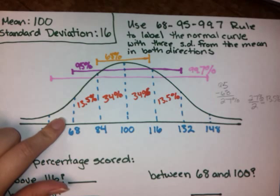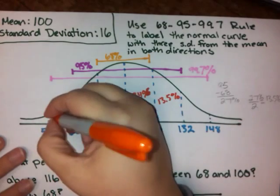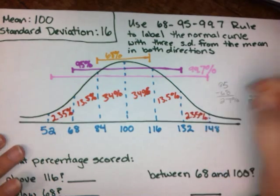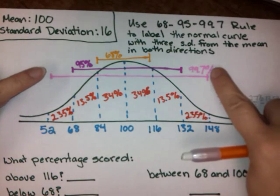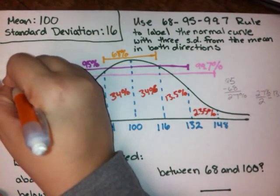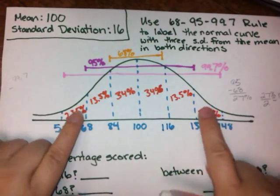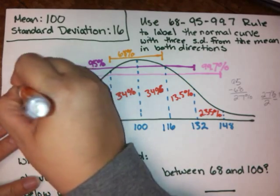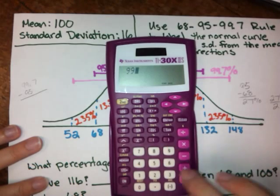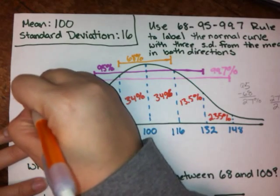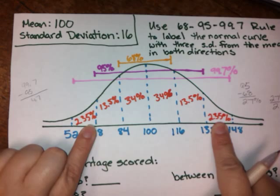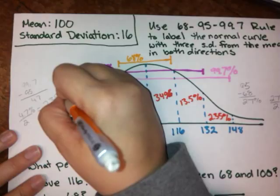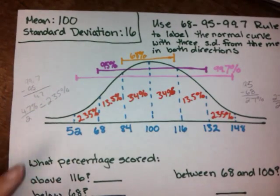What about between 2 and 3 standard deviations away? Those are going to be 2.35% on each side. Here's the work: 99.7% fall within 3 standard deviations. We subtract the 95% already accounted for: 99.7 minus 95 equals 4.7. Then 4.7 divided by 2 gives us 2.35% for each of those sections.